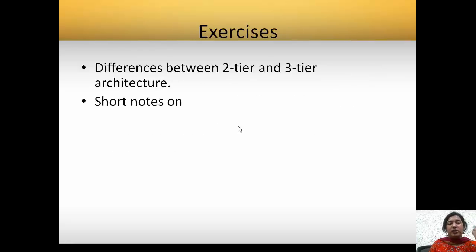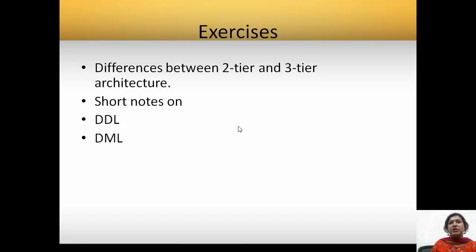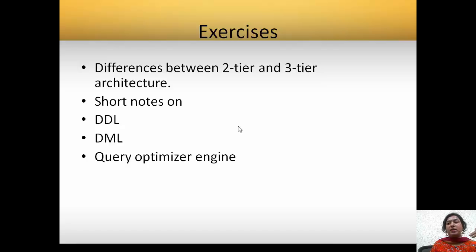The exercises you need to do are: know the differences between a two-tier and three-tier architecture. You can learn short notes on DDL, which is data definition language — queries that allow you to create any object in the database management system. Next, we have DML statements, which allow you to manipulate records — insert, update, delete — in the database. Also study the query optimizer engine, which evaluates and reduces the cost of queries before they are executed, and the buffer manager, which handles how transactions are stored in the buffer and executed one by one.